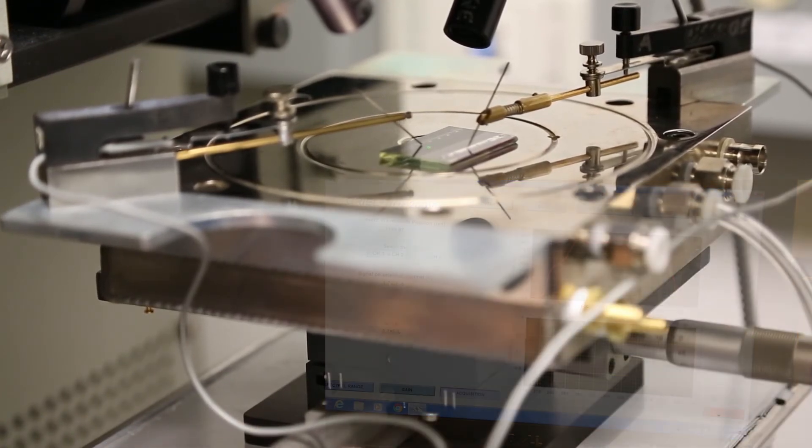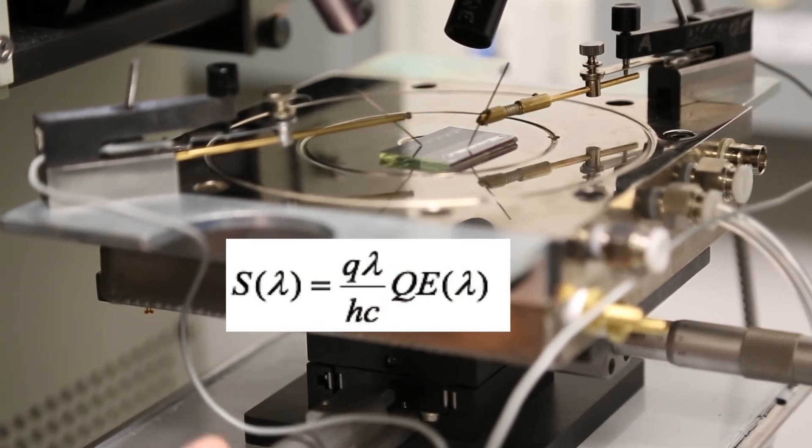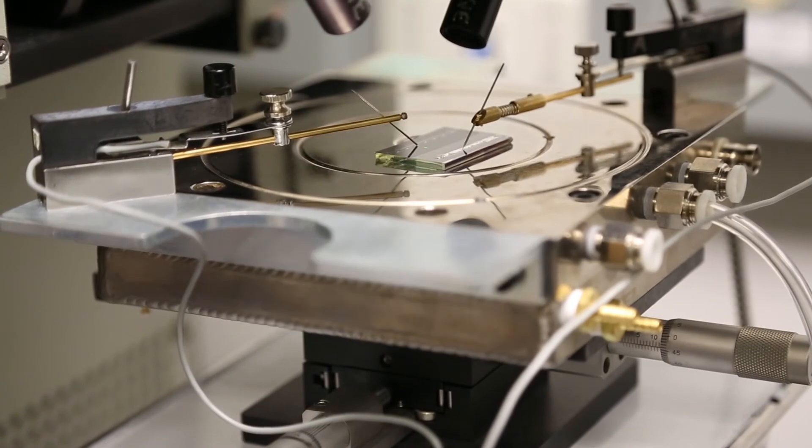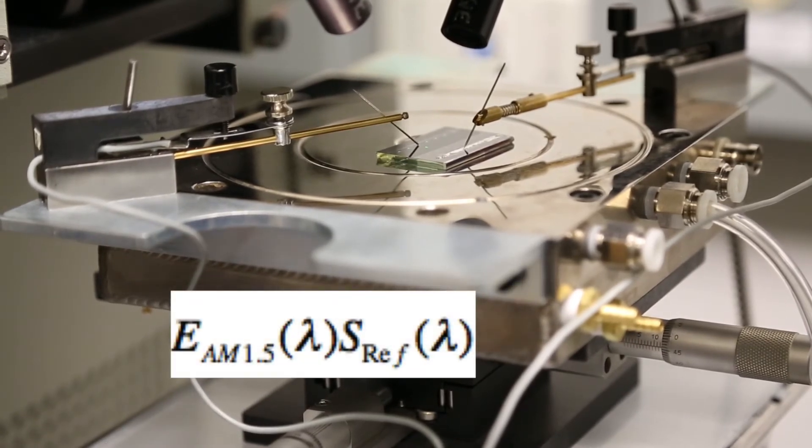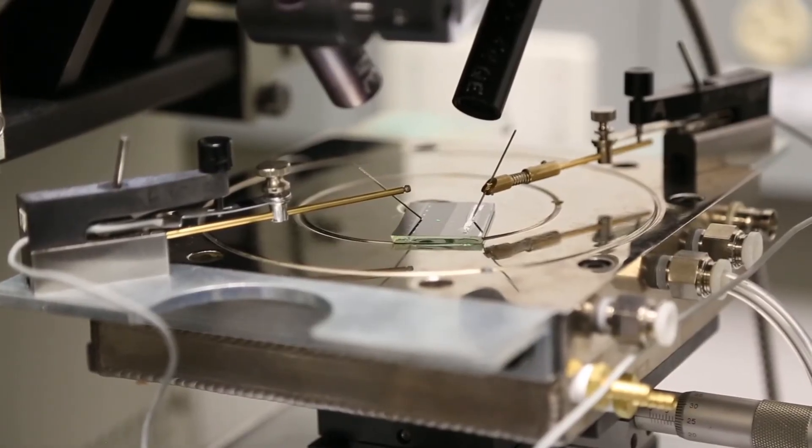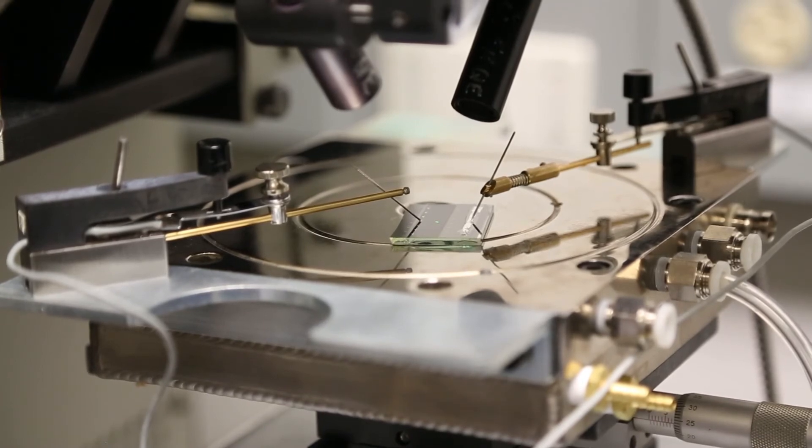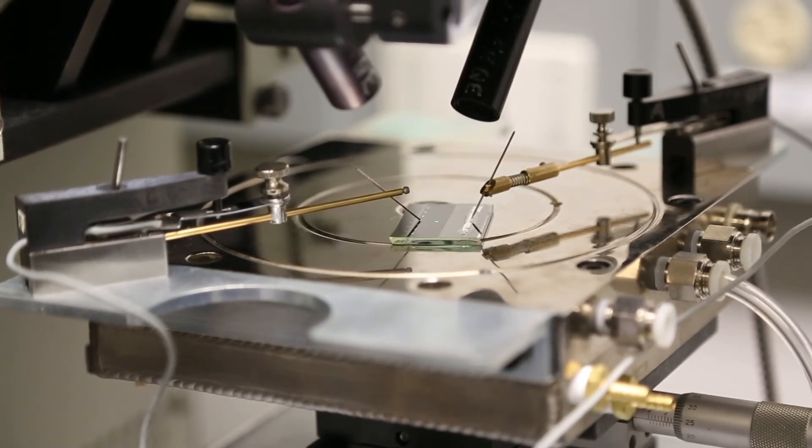We begin by measuring the external quantum efficiency, EQE, of the reference cell using this equation. Once you know the spectral response of the cell, multiply by the AM 1.5G spectrum and a factor proportional to the wavelength to obtain JSC under one sun. You can multiply by the area of the cell to calculate ISC. We will use this value later.